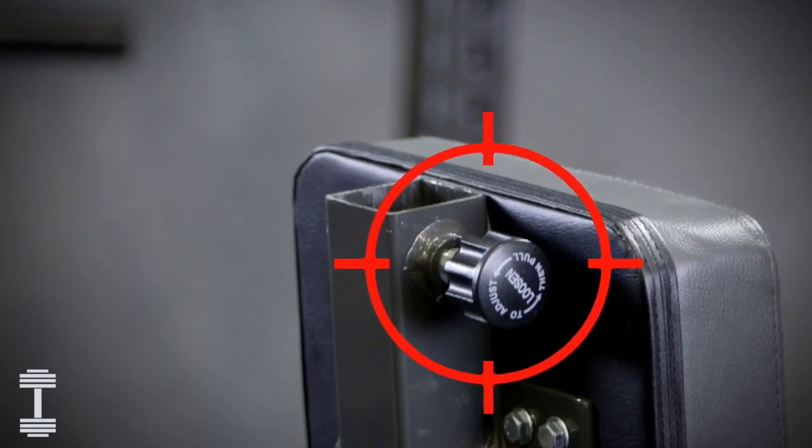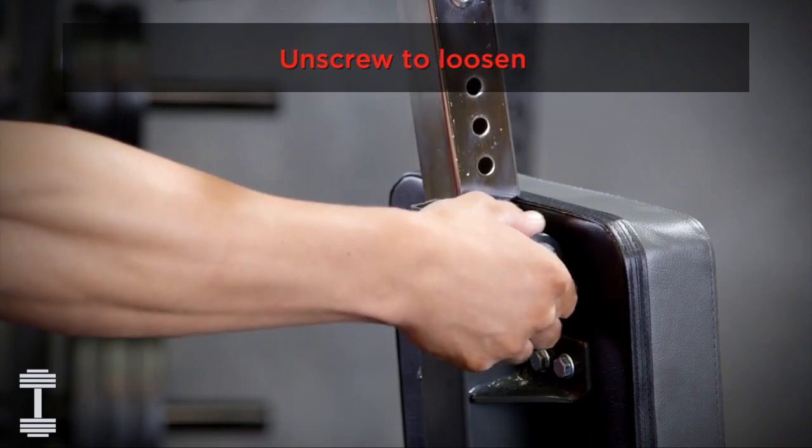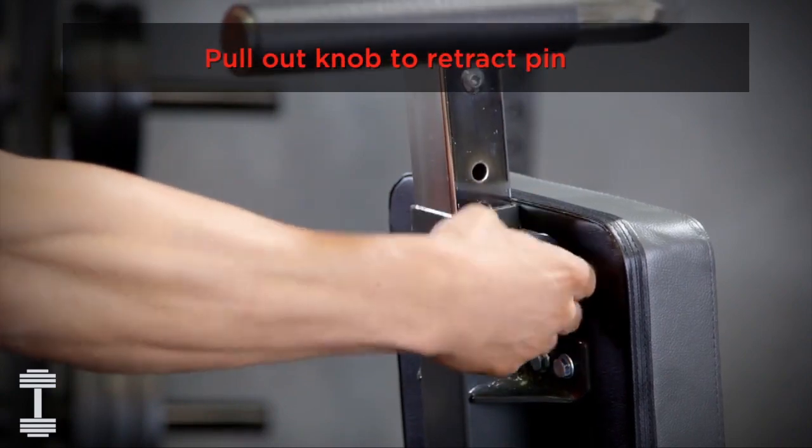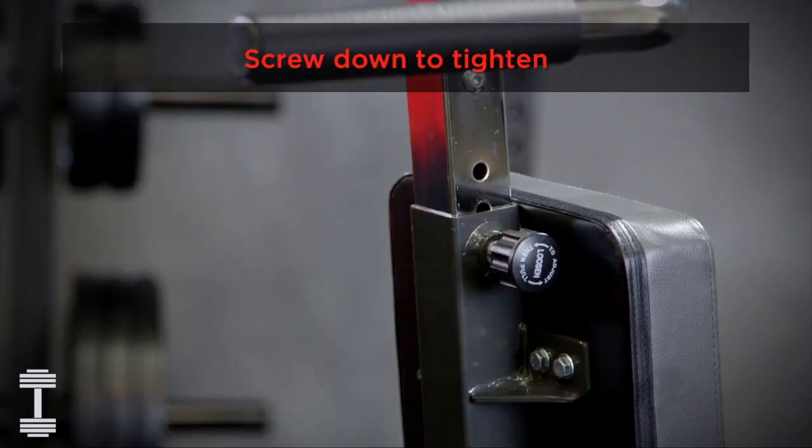The pull pin holds various attachments and has a tightening feature. To operate, unscrew to loosen, then pull the knob to retract the pin. Insert an attachment and let the pin snap into the hole. You can turn the knob to tighten the connection.